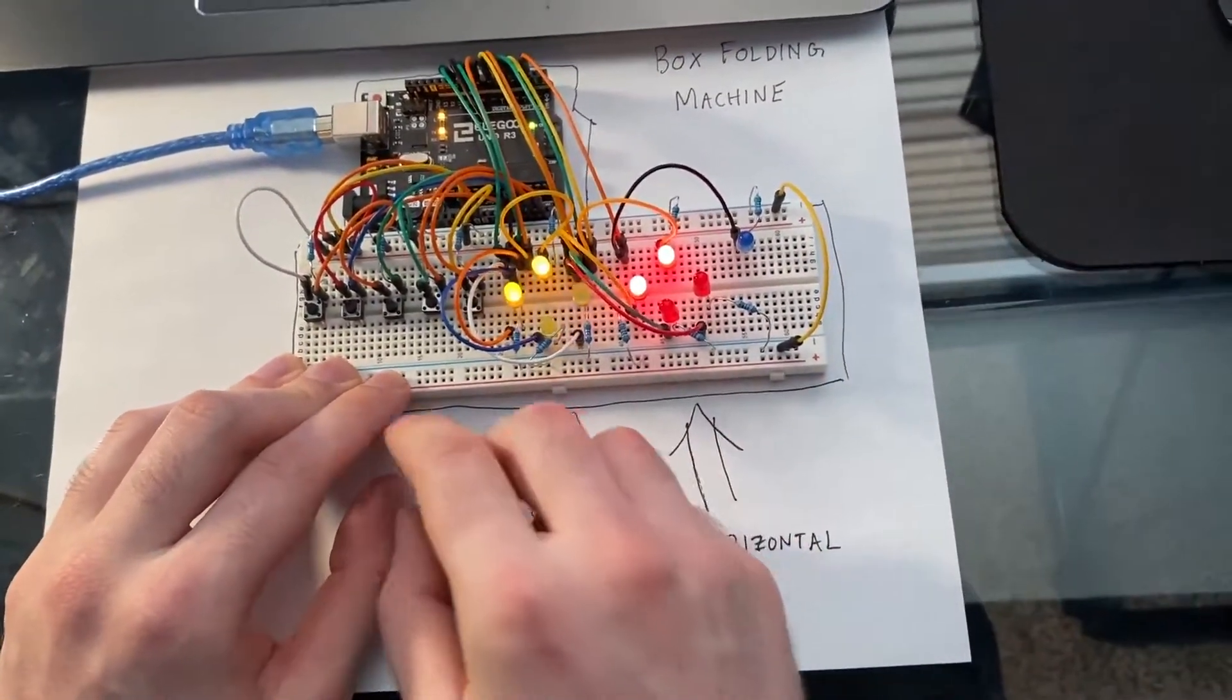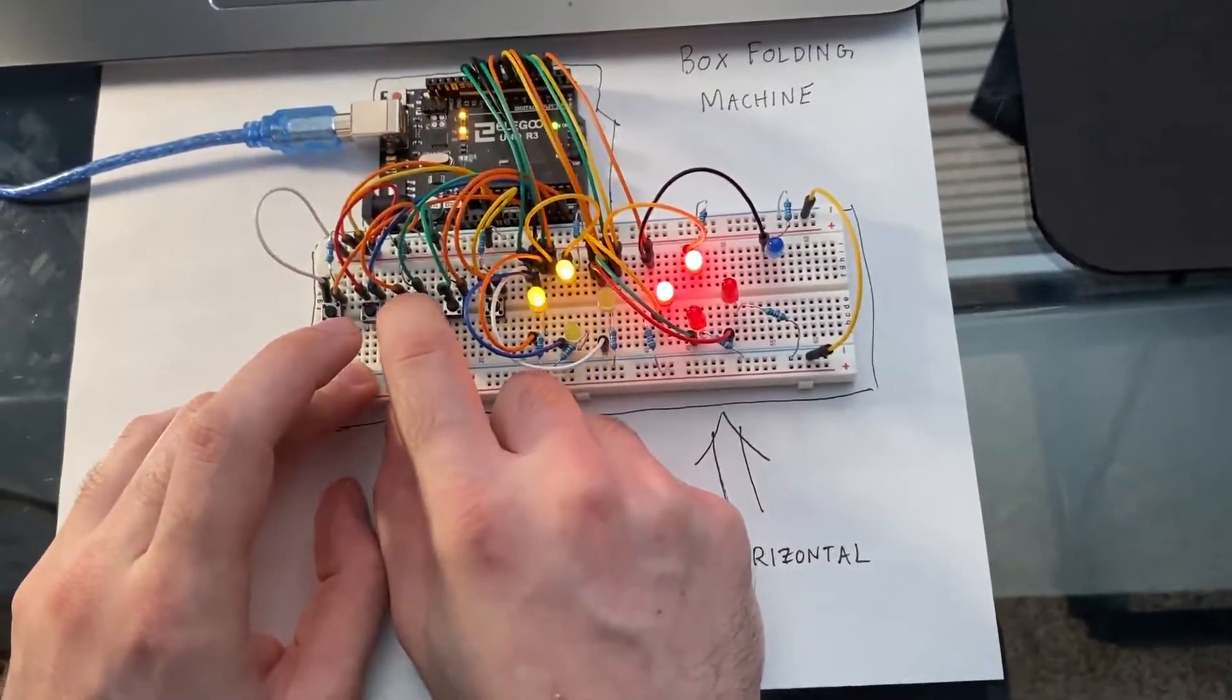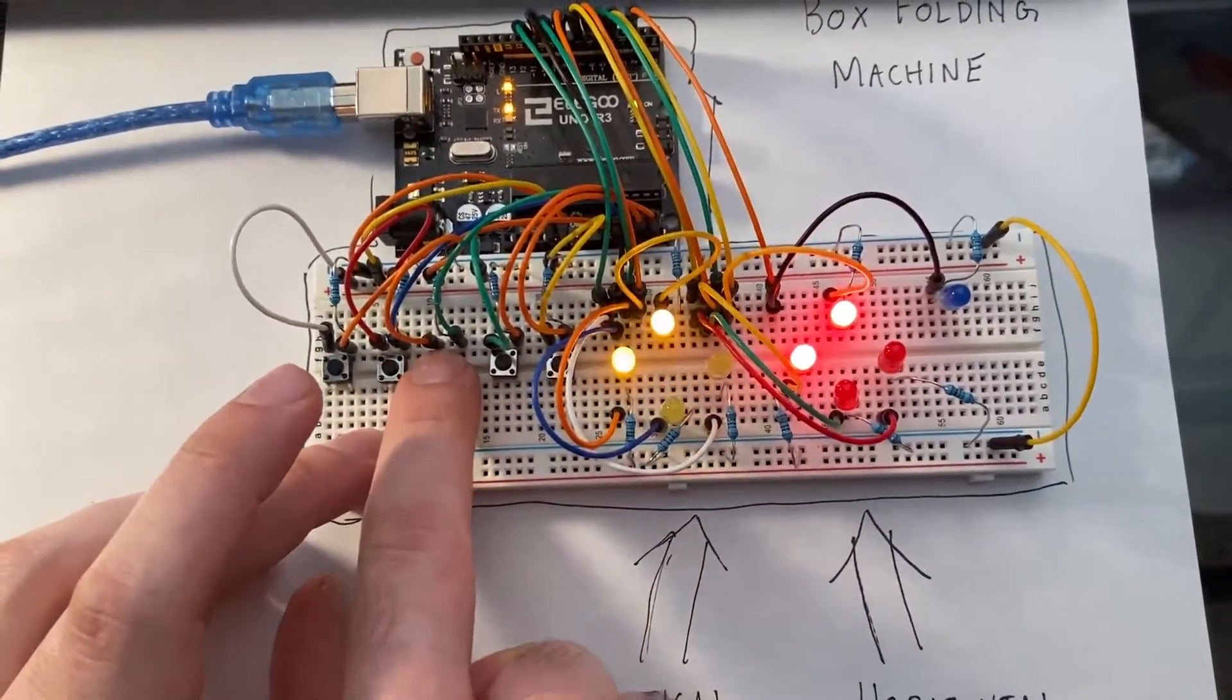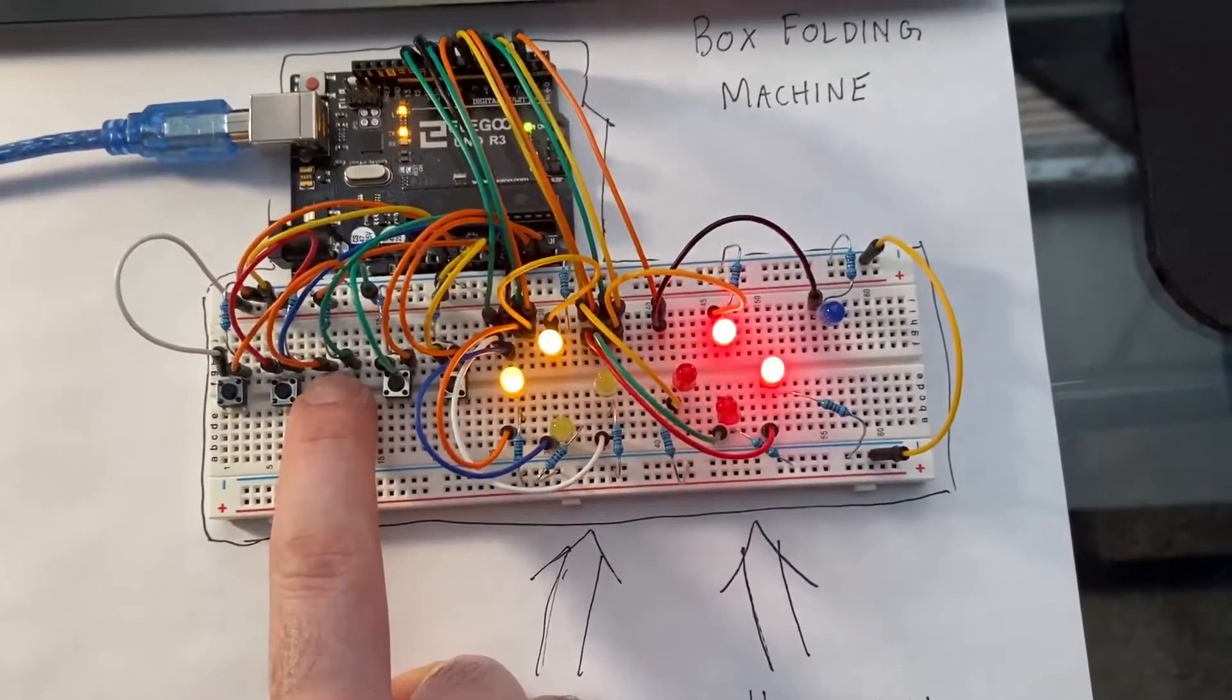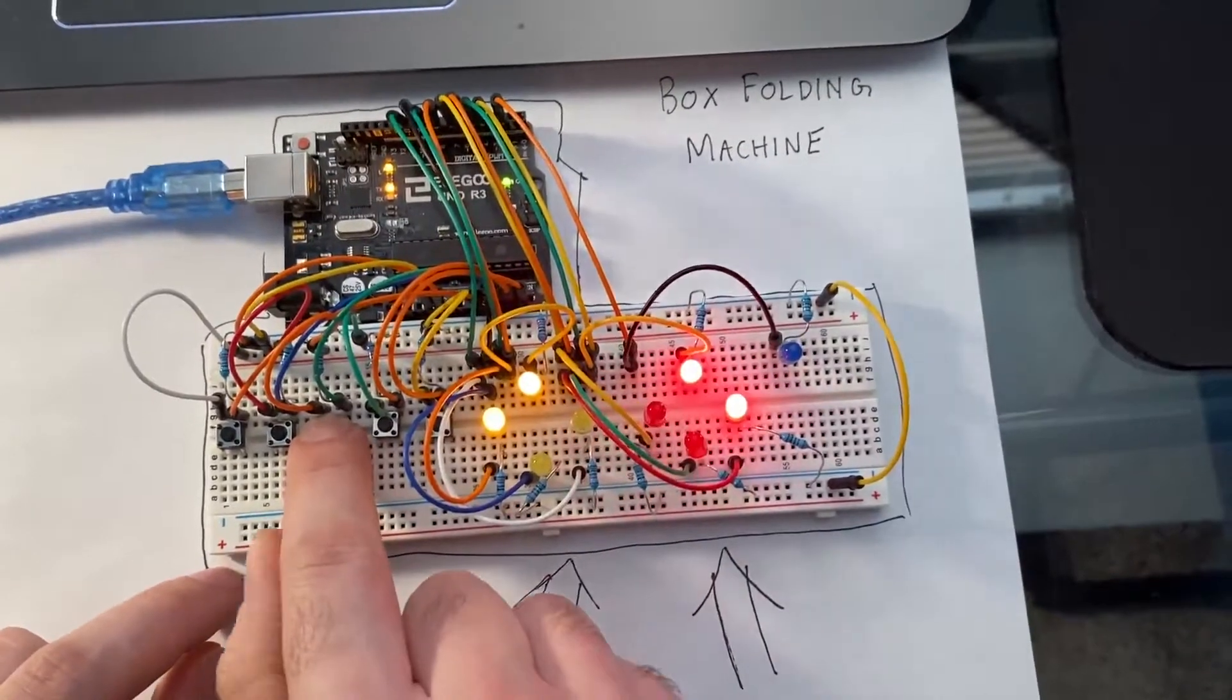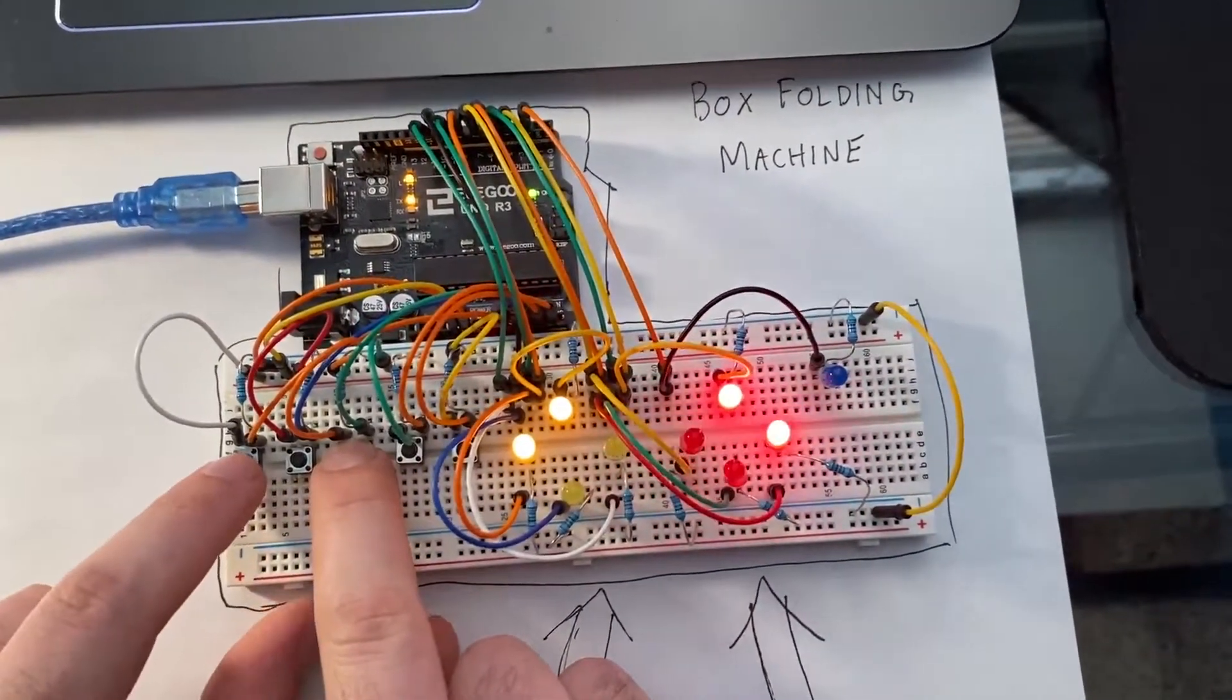So first we're going to be moving upward to C, vertically moving upward to start the sequence. So I'm going to click that. And once that limit switch is hit, the horizontal motion is going to go negatively until we hit limit switch A. So I'll do that.